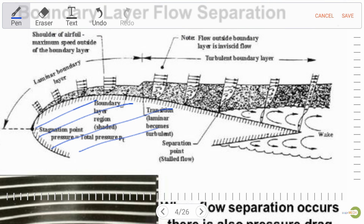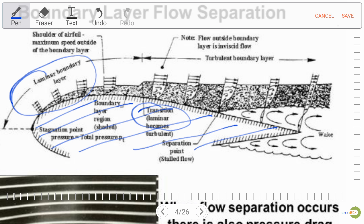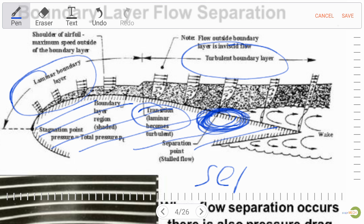Here we have a cross section of an airplane wing, or we can say a face body. At the front we have a laminar boundary layer, which gradually converts into transition and further into turbulent. At this point we have separation in the flow, and the flow will separate from this point as we can see.